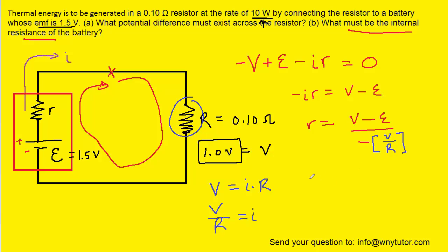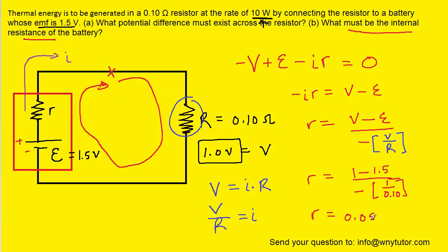Now we plug in all the known values: 1 volt for the potential difference across the resistor, 1.5 volts for the EMF, and 1 volt divided by 0.10 ohms for the current. Processing this gives us an internal resistance of 0.05 ohms, which is the correct answer to Part B.